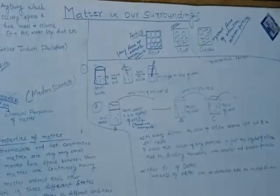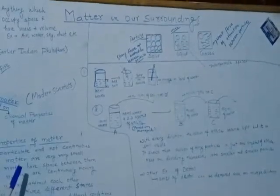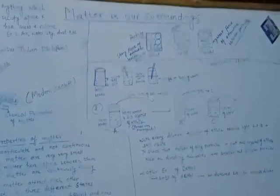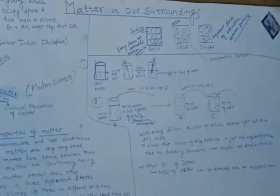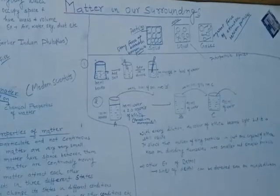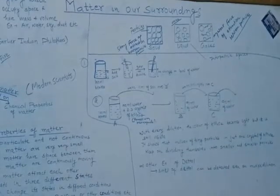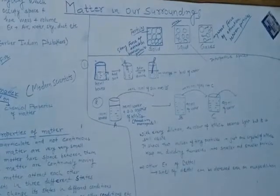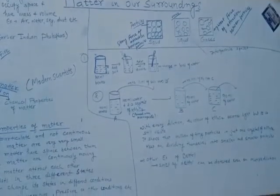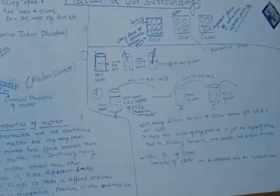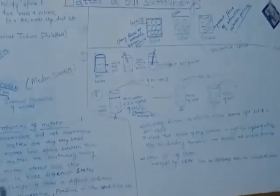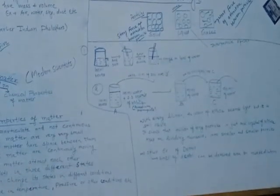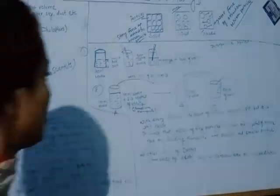The second point is that particles of matter are very, very small. Matter contains particles that are very tiny in nature and are present in millions in number. We can prove this by taking one example.